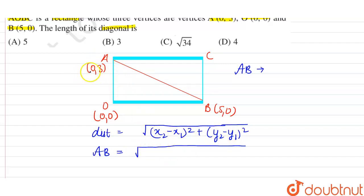So let's say 0 is x1 and 3 is y1. Similarly, 5 is x2 and 0 is y2. Now let's substitute the values. So this is equal to x2 minus x1 is 5 minus 0 whole square, plus y2 minus y1 means 0 minus 3 whole square.